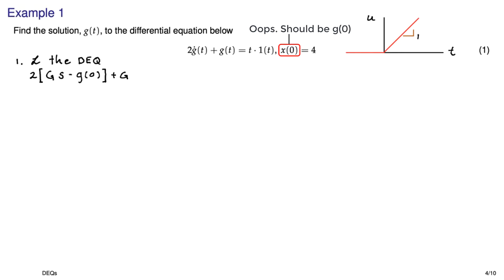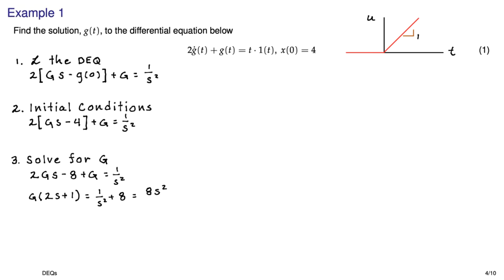Take the Laplace transform of the differential equation. We have 2 times the g of s minus some initial condition, and then just plus capital G, because the Laplace transform of little g of t is equal to capital G. And then we have the Laplace transform of the ramp. Stick in the initial conditions, and now we just have to solve for g of s. So multiply everything out, rearrange it a bit where we factor out the capital G, simplify, and then solve for capital G. And then maybe simplify again.